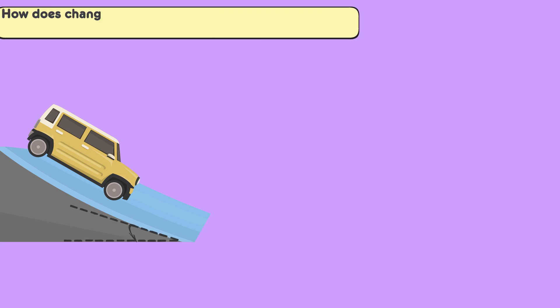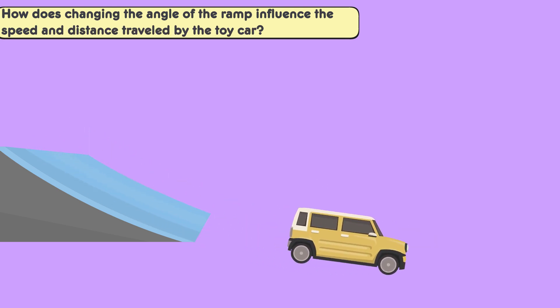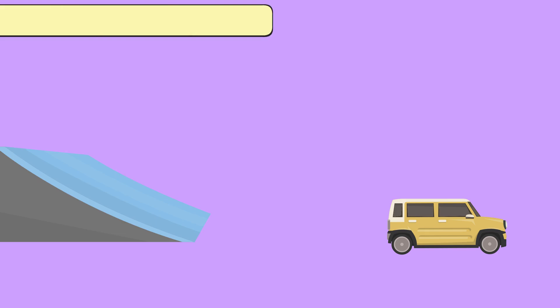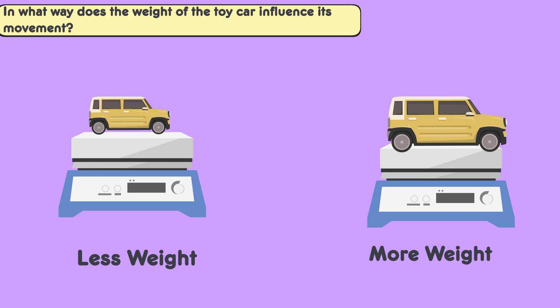How does changing the angle of the ramp influence the speed and distance traveled by the toy car? What can this reveal about the relationship between angle and motion? In what way does the weight of the toy car influence its movement? How can measuring weight help in comparing different trials?